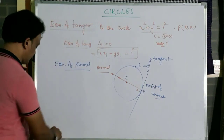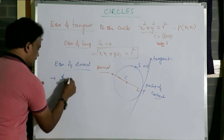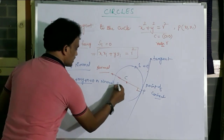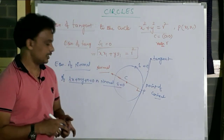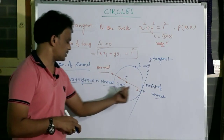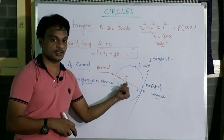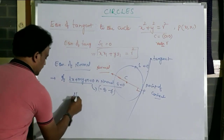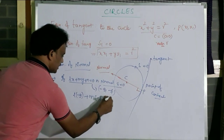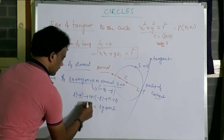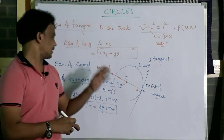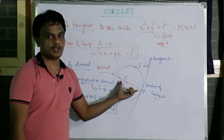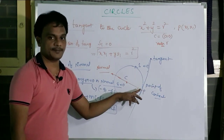They may ask: if the line LX + MY + N = 0 is normal to the circle S equals 0, what is the condition? Since the normal passes through the center (−g, −f), substituting: L(−g) + M(−f) + N = 0, which gives N equals Lg plus Mf. Whenever you find the normal at point P, it is enough to find the equation of the line passing through the center of the circle and the point of contact.